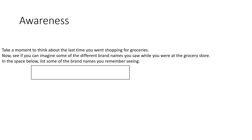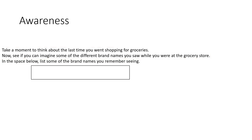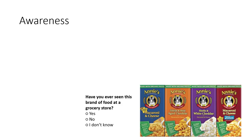Now take a moment to think about the last time you went shopping for groceries. See if you can imagine some of the different brand names you saw while actually at the grocery store — in the space below, list some of the brand names that you remember seeing. What's different about this measure compared to the previous one? Clearly, these first two sentences are trying to help the individual put themselves back into the previous context from which we're asking them to recall information.